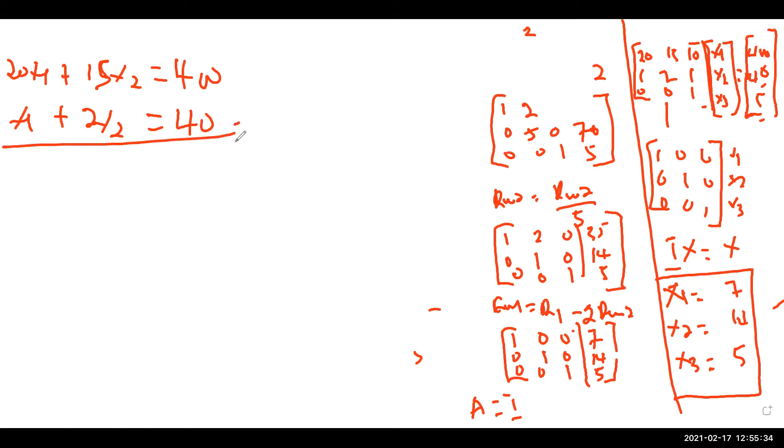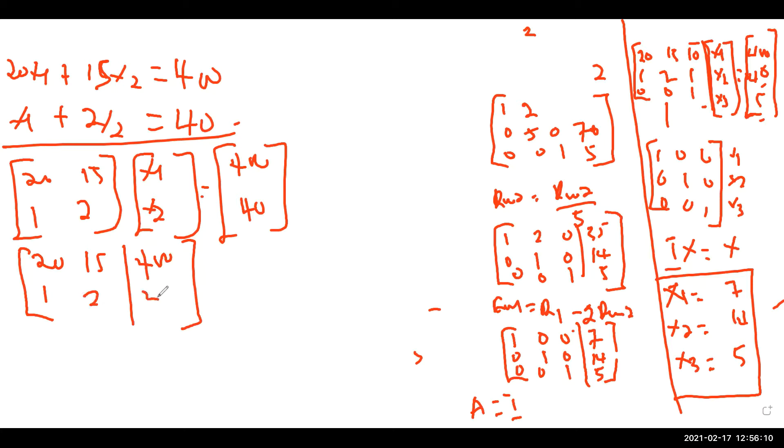First of all we have to convert this into a matrix form. So I have 20, 15, then one and two. I have x1, x2 equals to 440. Then one, two, and 40. What should we do? We augment this: we have 20, 15, 400, then one, two, and 40.